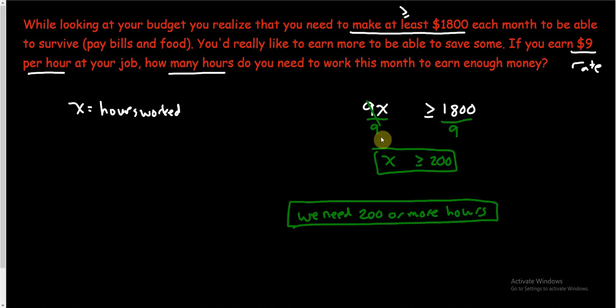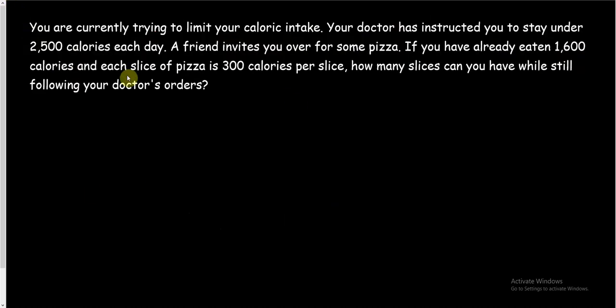Let's look at another example. You're currently trying to limit your caloric intake. Your doctor has instructed you to stay under 2500 calories each day. A friend invites you over for some pizza. If you've already eaten 1600 calories and each slice of pizza is 300 calories per slice, how many slices can you have while still following your doctor's orders?